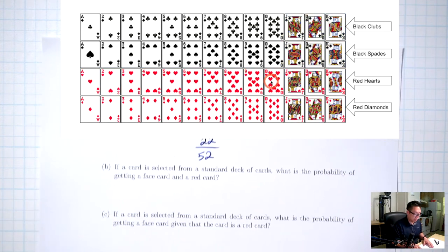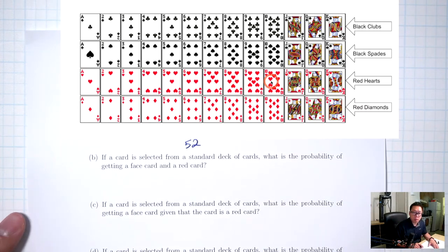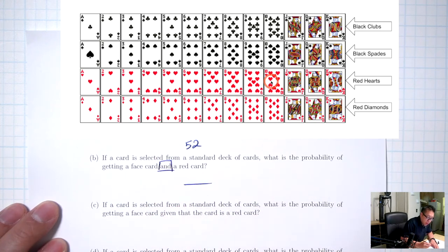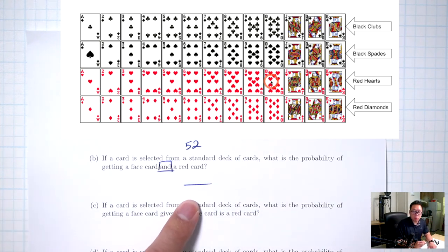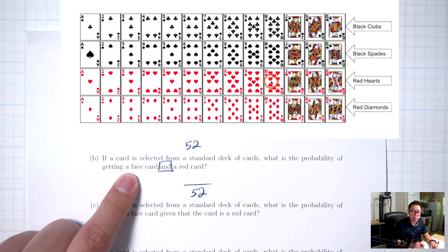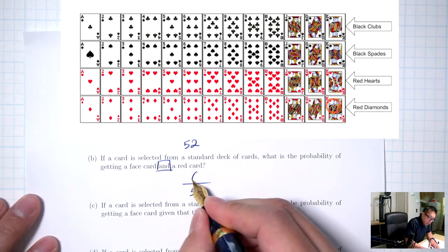Part B: if a card is selected from a standard deck of cards, what's the probability of getting a face card AND a red card? Keyword: AND. Bottom is 52. AND means at the same time — face cards that are at the same time red. Red face cards: J, Q, K hearts and J, Q, K diamonds. That's 6.